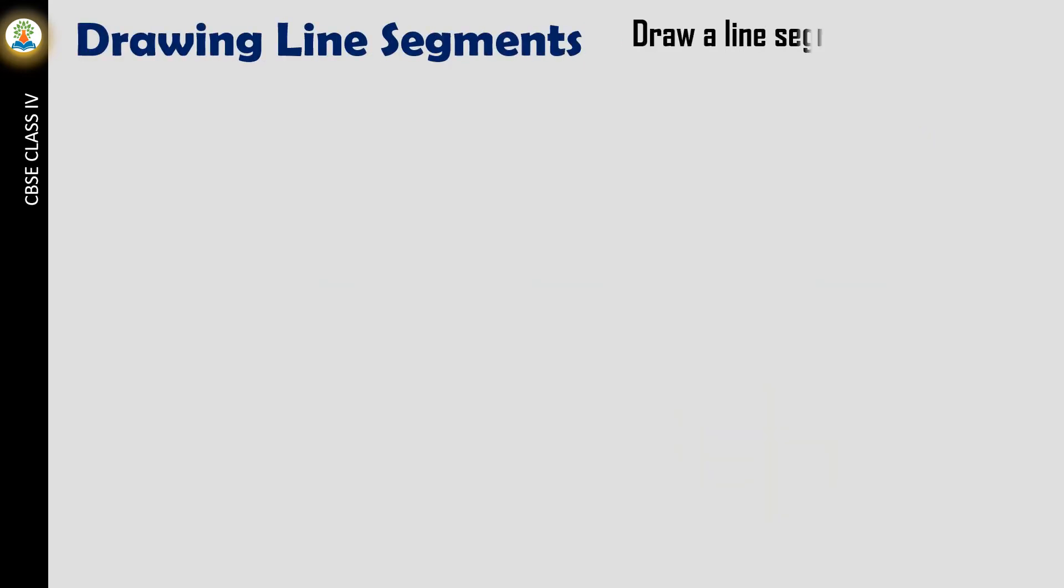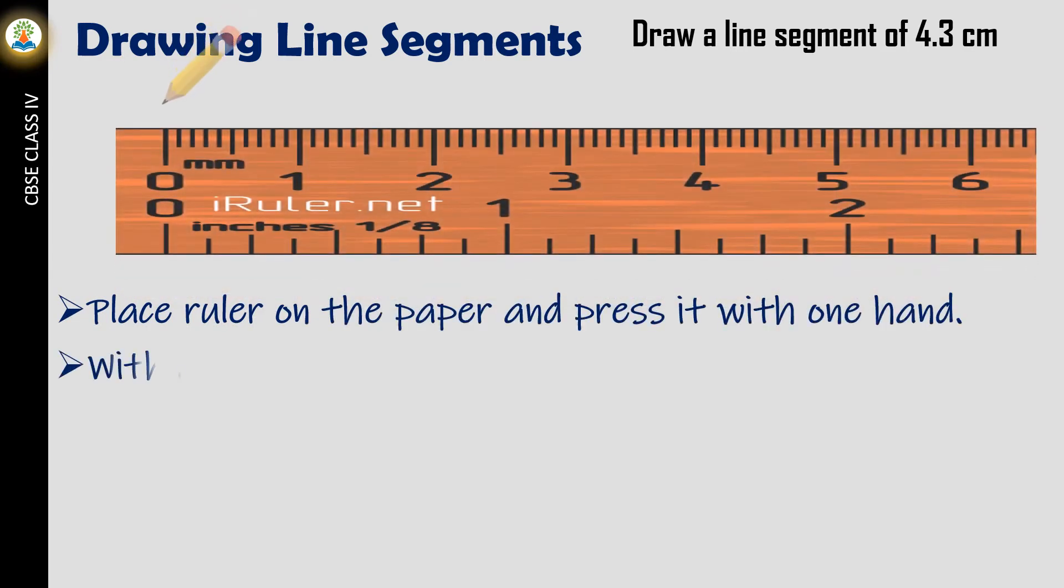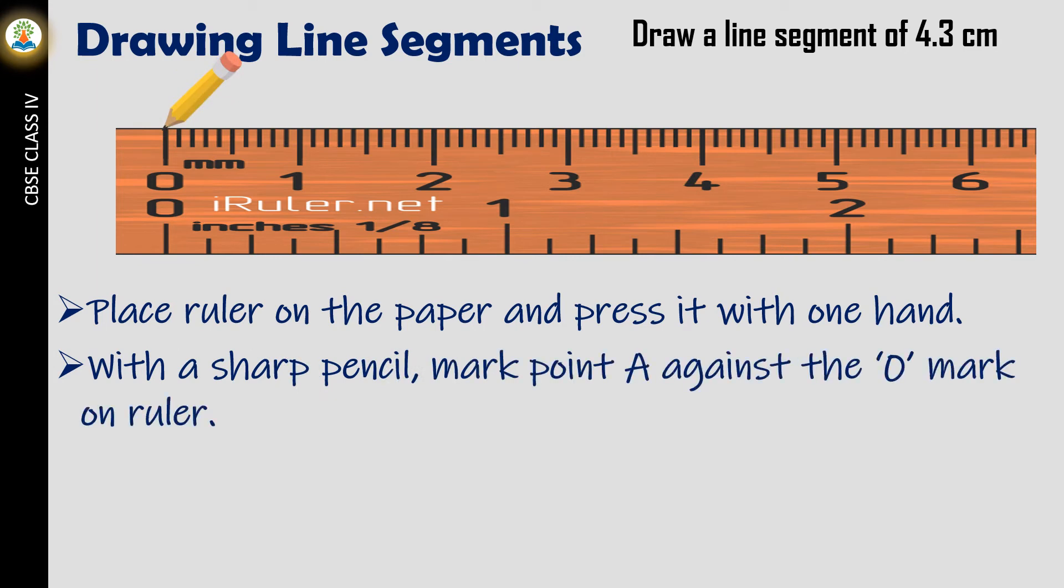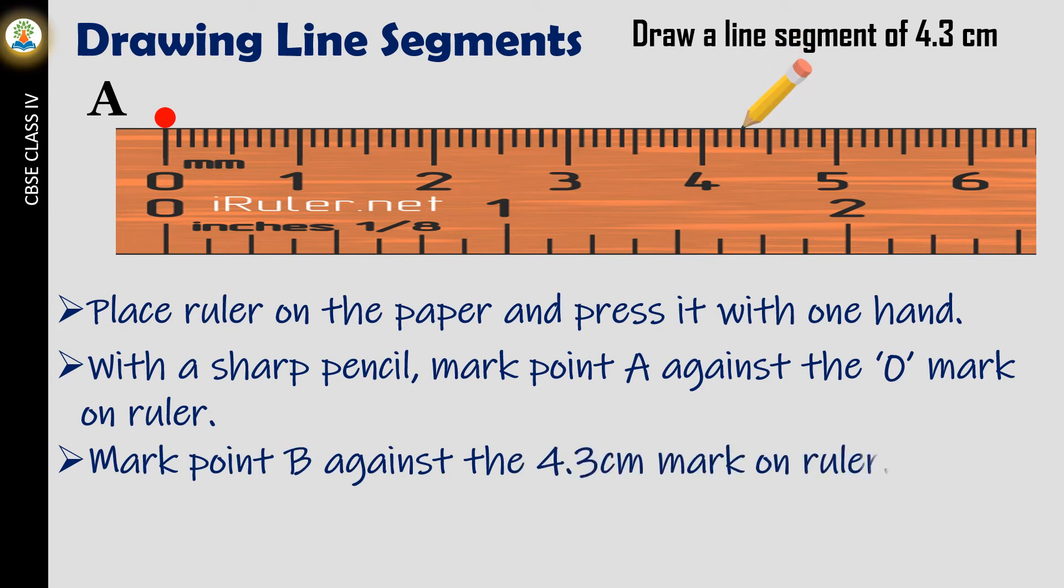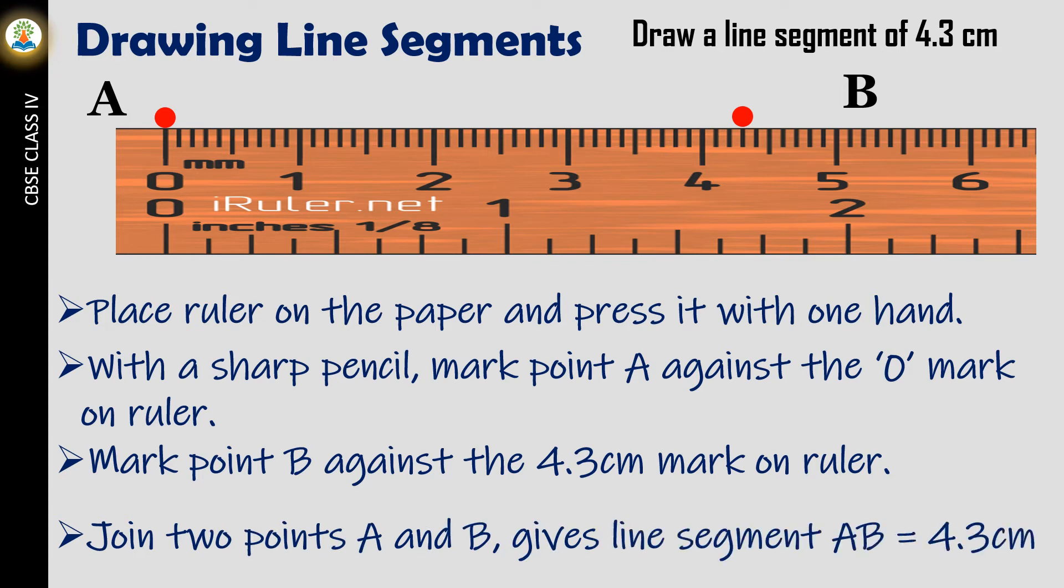Draw a line segment of 4.3 centimeters. Place a ruler on the paper and press it with one hand. With a sharp pencil, mark point A against the zero mark on the ruler. Mark point B against the 4.3 centimeters mark on the ruler. Join the two points A and B to give line segment AB of 4.3 centimeters.